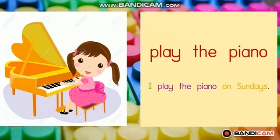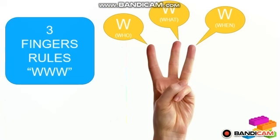Now we have 7 phrases. And next, I will show you how to write a sentence based on the phrases given. Please share with me your ears and your eyes. Focus. Now, we are going to write a sentence based on 3 fingers rules. 3 fingers rules. What are the rules? W, W, W.